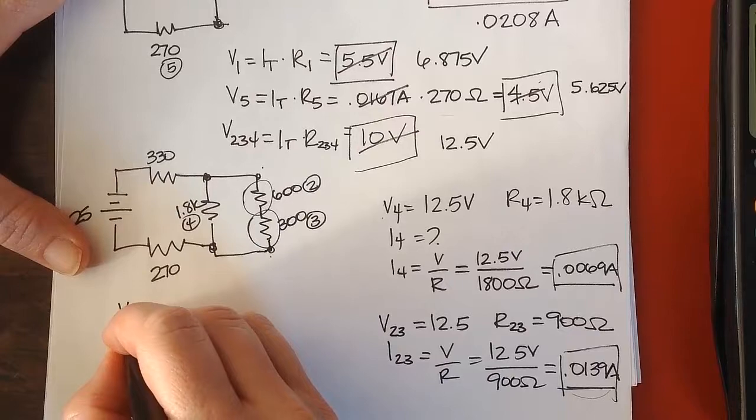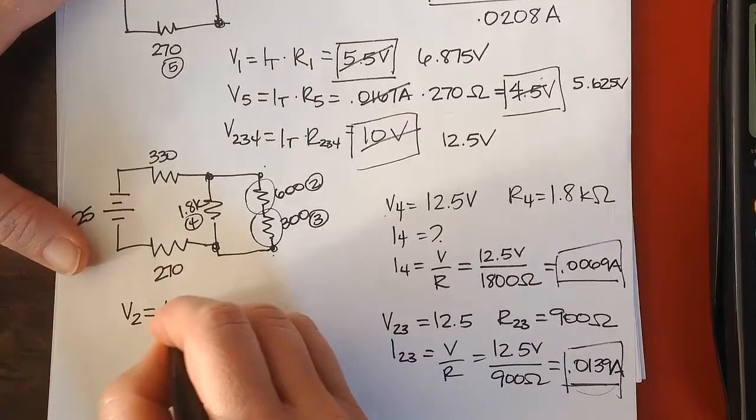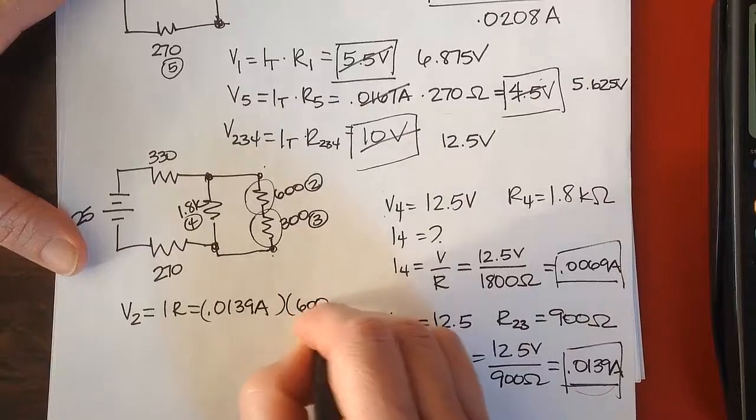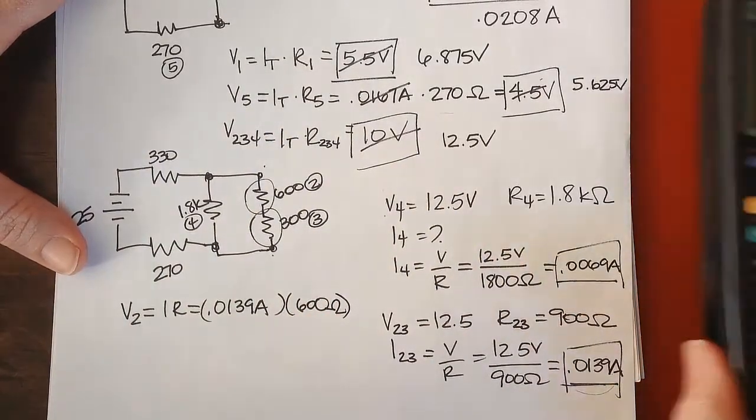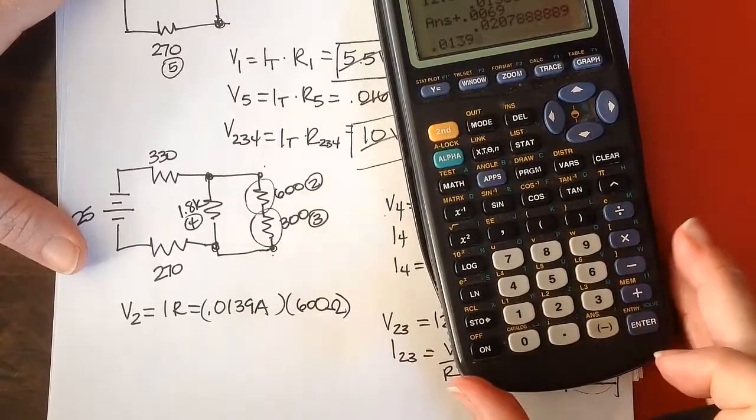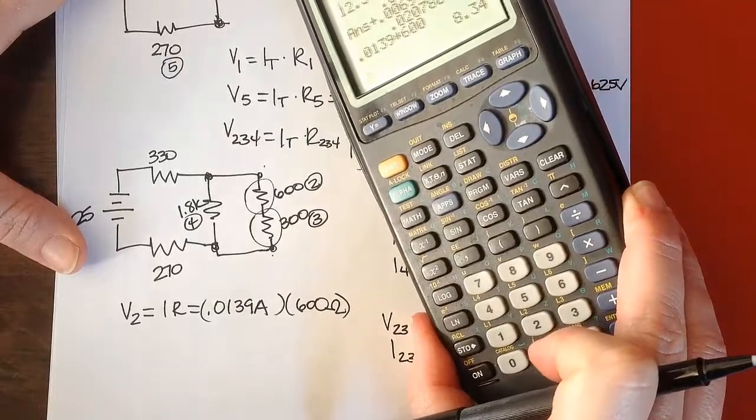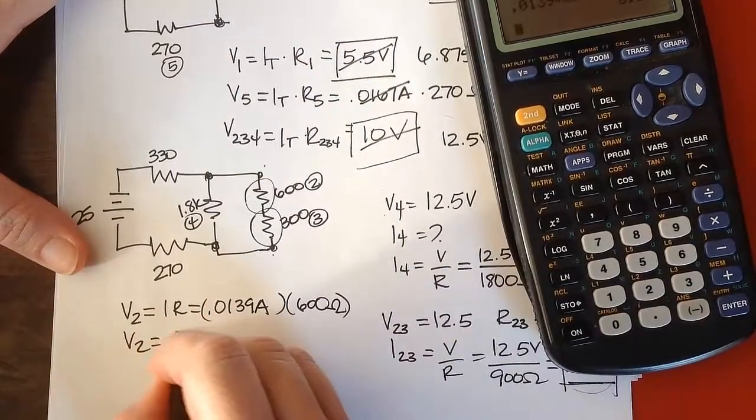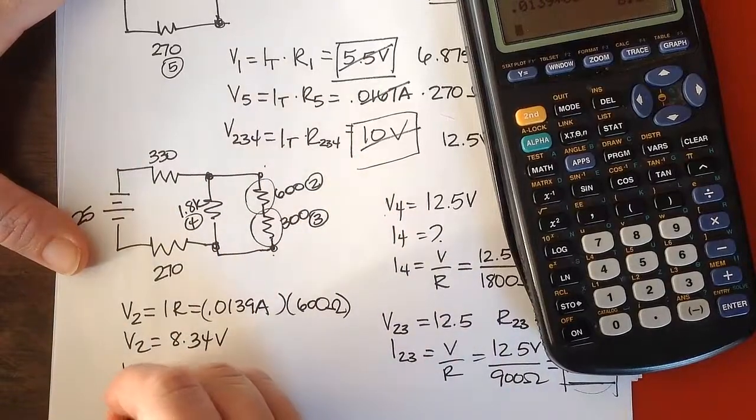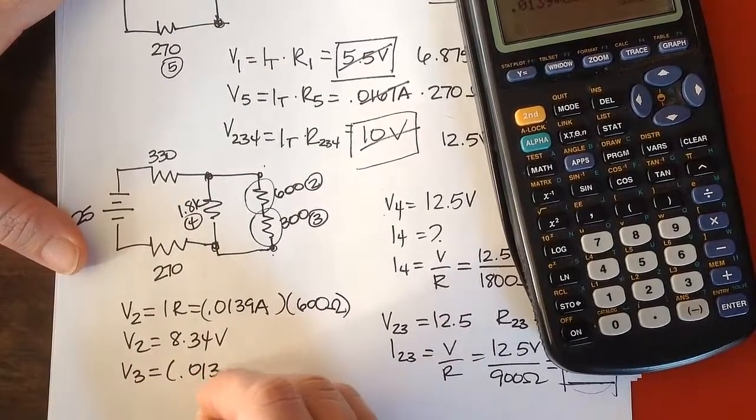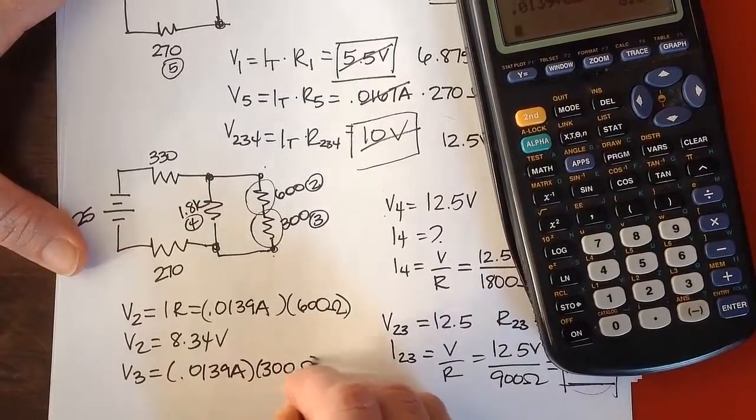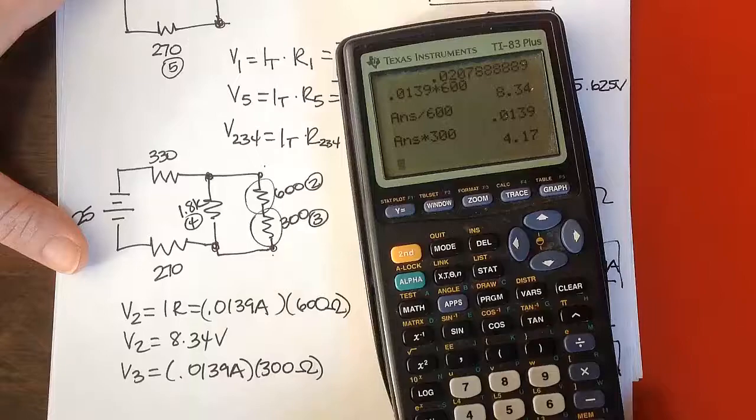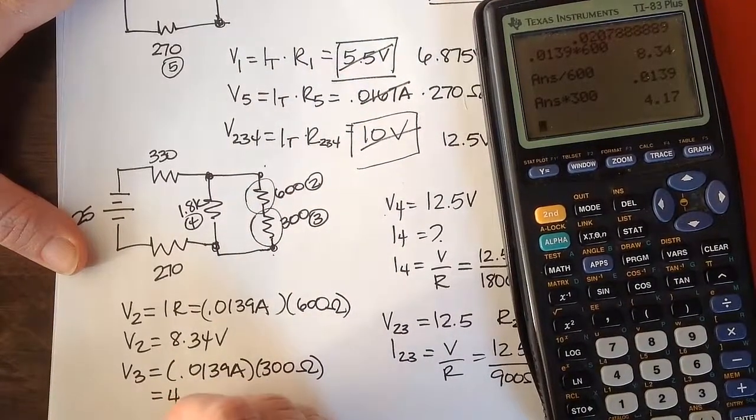And pretty much the only thing we haven't done now is characterize the voltage drop across those two components. So V2 is going to be equal to IR, so 0.0139 amps times 600. And 0.0139 times 600, I get 8.34 volts. And then V3 should be at the same current, right? Those two components are in series, 300 ohms. So I get 4.17 volts.